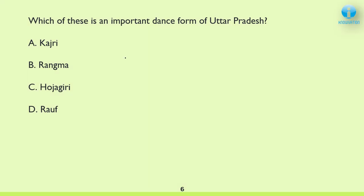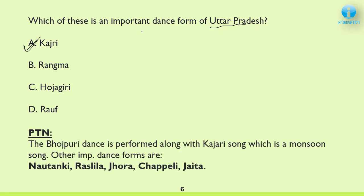Next: Which of these is an important dance form of Uttar Pradesh? The correct answer is A — Kajri. Kajri is basically a Bhojpuri dance form performed along with the Kajari song, which is a monsoon song. Some more important dance forms related to UP are Nautanki, Rasleela, Jhora, Chhapeli, and Jayata.